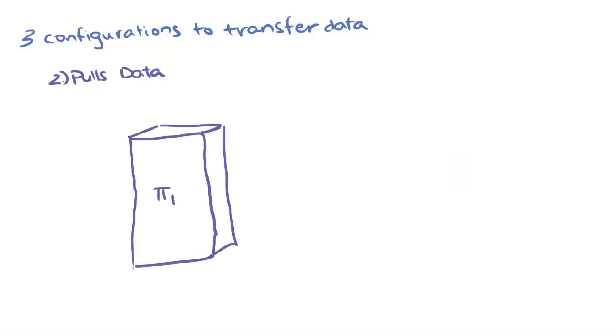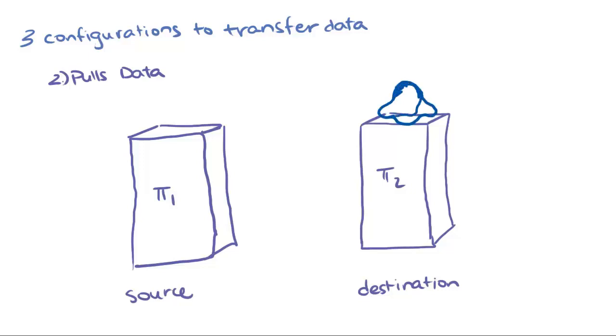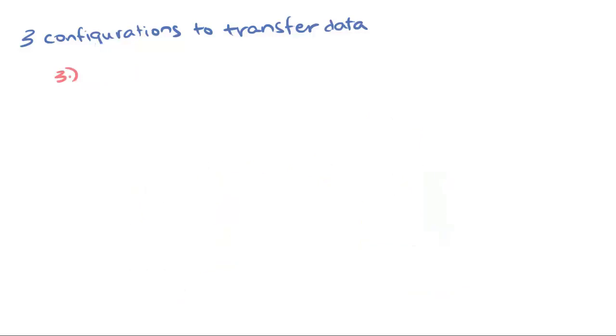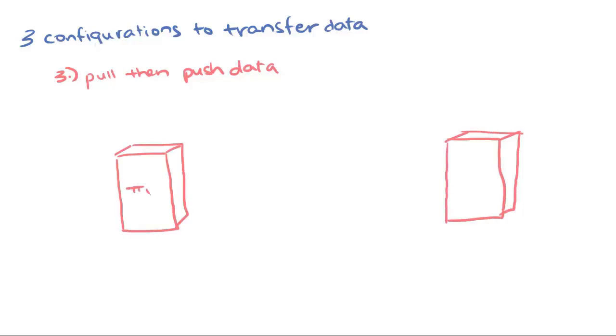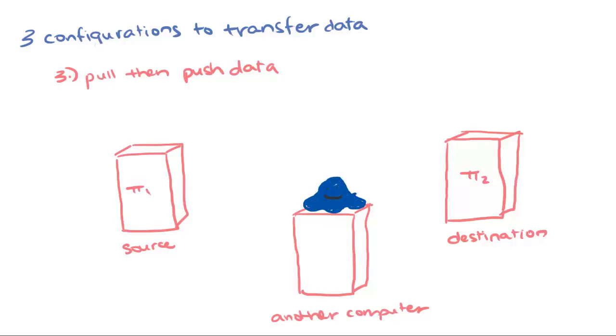The second configuration is where data are pulled from the source PI server onto the destination PI server, and the interface is located on the destination PI server. In the third configuration, a third machine pulls data from the source PI server and then pushes it to the destination PI server.